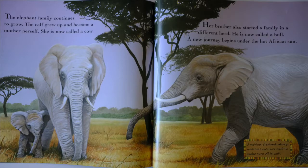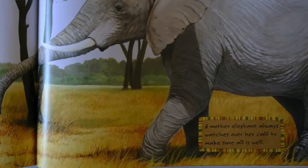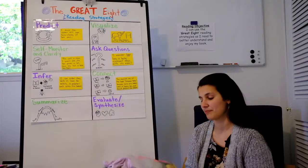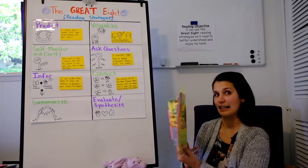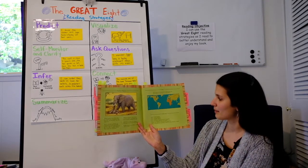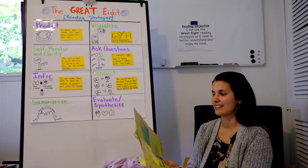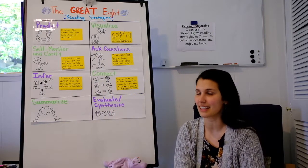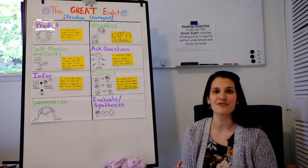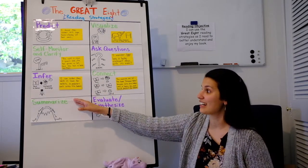At last, the elephant family continues to grow. The calf grew up and became a mother herself. She is now called a cow. Her brother also started a family in a different herd. He is now called a bull. A new journey begins under the hot African sun. A mother elephant always watches over her calf to make sure all is well. And then we had our diagram and our map and our glossary and our index.